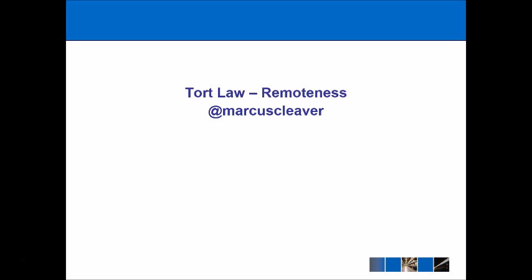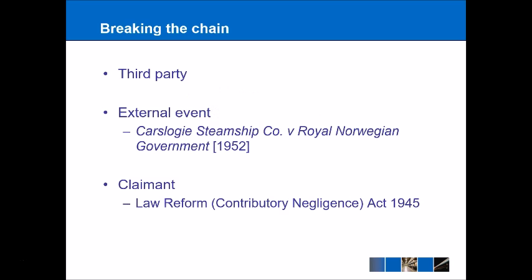In terms of remoteness, what we're really looking for is someone or something that is acting to break the chain of causation. The actions of a third party — someone who is neither the claimant nor the defendant — might act to break the chain of causation. An external event such as an act of God can also do so, as in Carslogi Steamship Company where there was a storm. Finally, under section 1 of the Law Reform (Contributory Negligence) Act 1945, if a claimant was 30% responsible for the damage suffered, the defendant might have to pay 30% less in damages overall.